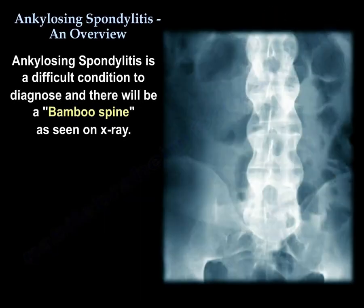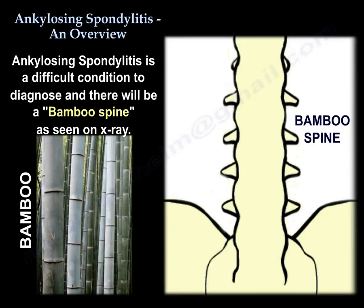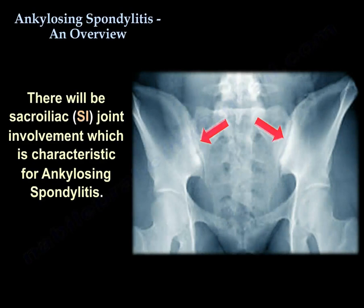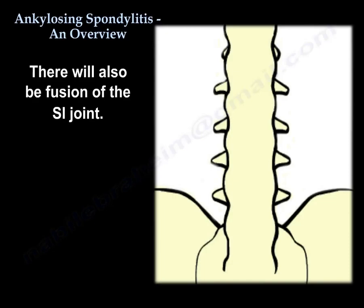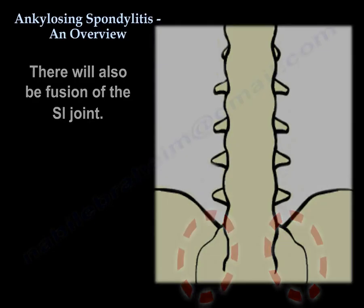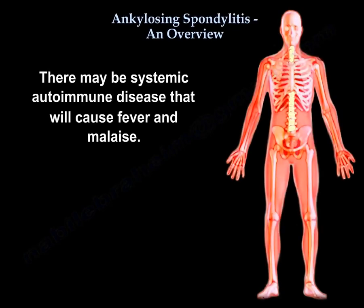Ankylosing spondylitis is a difficult condition to diagnose. The X-ray will show a classic 'bamboo spine' appearance. There will be sacroiliac joint involvement, which is characteristic of the disease, and ultimately fusion of the SI joint.